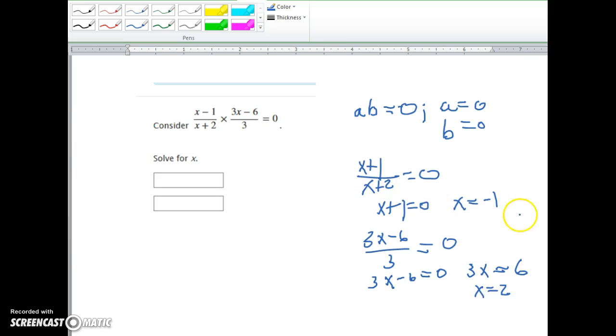We're okay with that because negative 2 would have been what made it undefined. So we have x equals negative 1 and x equals 2.